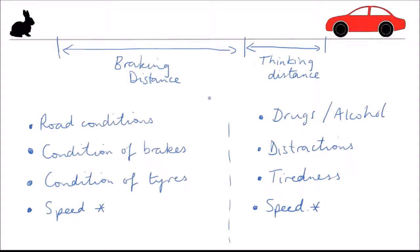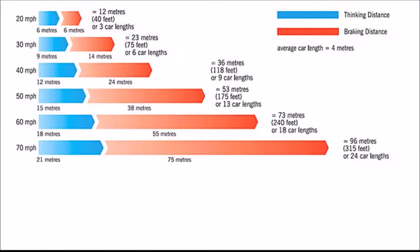So if we combine these two distances, the thinking distance and the braking distance, their sum is called the stopping distance. As you can see from this image, both the thinking distance and the braking distance, and therefore the overall stopping distance, are affected by the speed of the car.